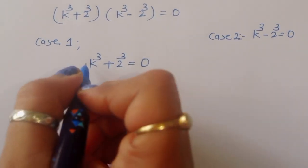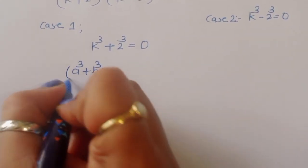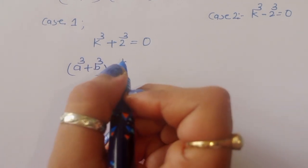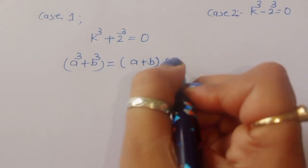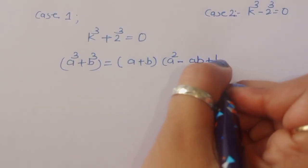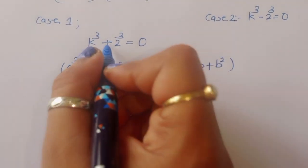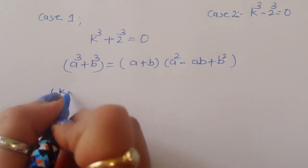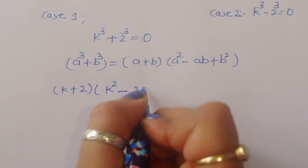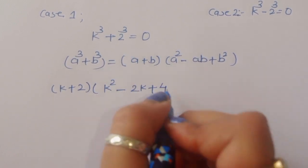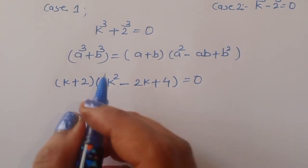Solving Case 1: k power 3 plus 2 power 3 equals 0. This is of the form a cube plus b cube, using the formula a cube plus b cube equals a plus b times a squared minus ab plus b squared. Applying this, we get k plus 2 times k squared minus 2k plus 4 equals 0.